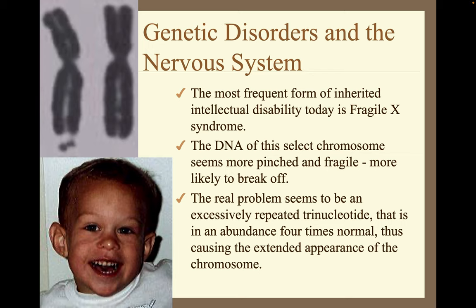The most frequent form of inherited intellectual disability today is fragile X syndrome. The DNA of this select chromosome seems more pinched and fragile, more likely to break off. The real problem seems to be an excessively repeated trinucleotide that is in abundance four times normal, thus causing the extended appearance of the chromosome.